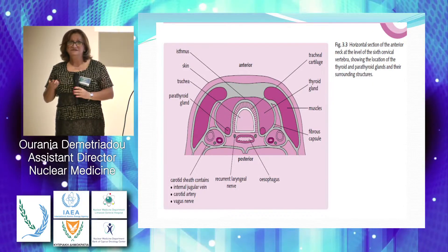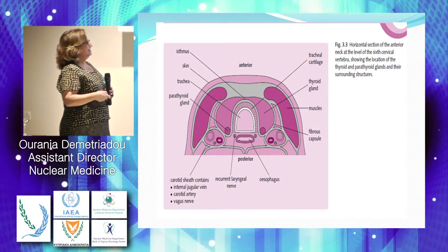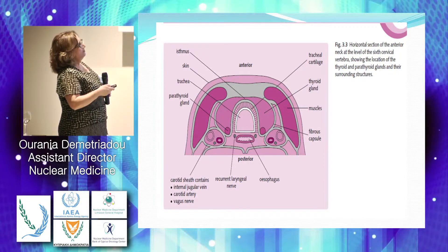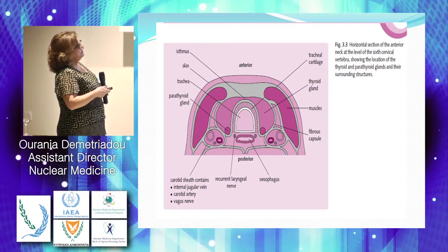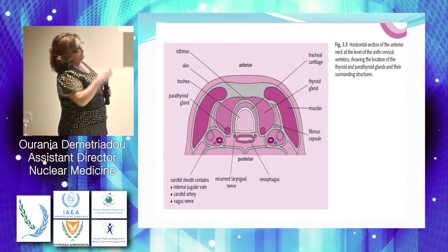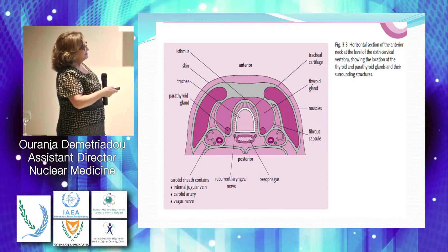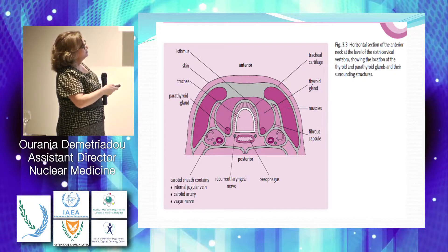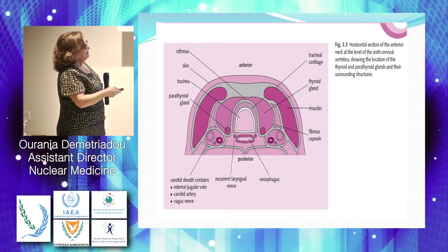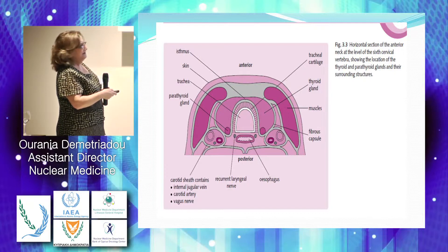In the afternoon practical session we'll see the horizontal section, so here you can imagine we have the two lobes of the thyroid — the right and the left. In the posterior part we have the parathyroid glands; in front we have the isthmus, the trachea, esophagus, and the carotid sheath with the jugular vein, carotid artery, and the vagus nerve.